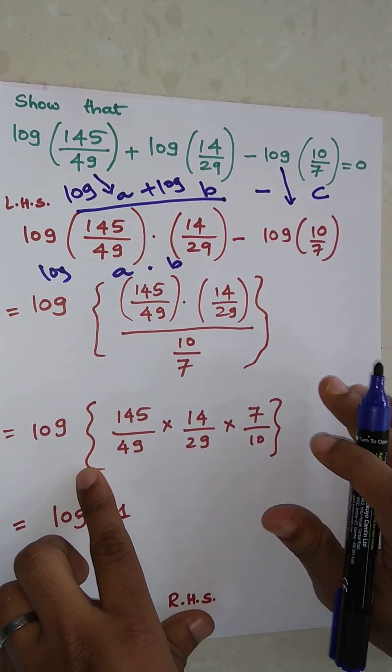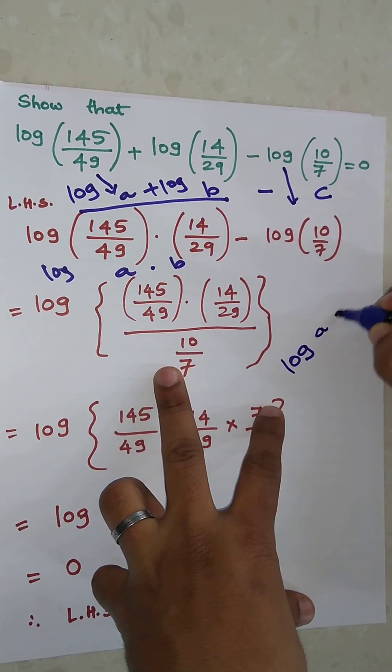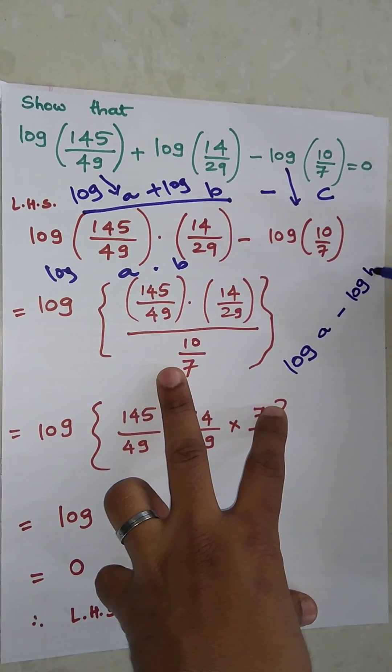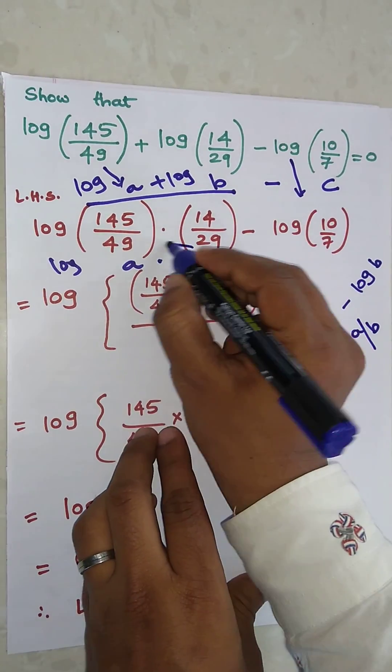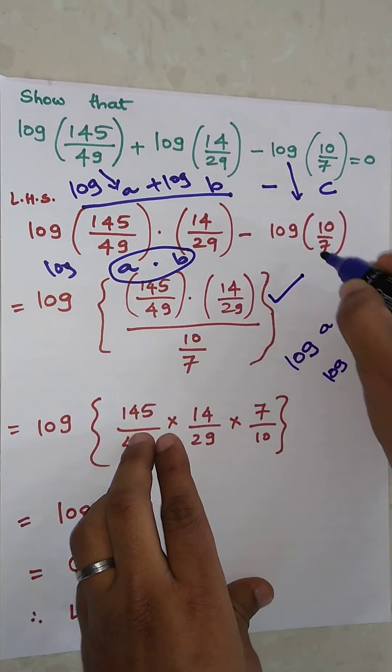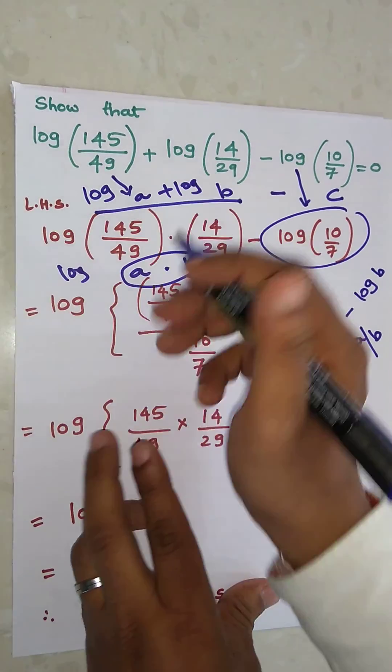This term will remain as it is. And when it comes to log a minus log b, it is equal to log(a upon b). So this term in the numerator and this term in the denominator, and log common outside.